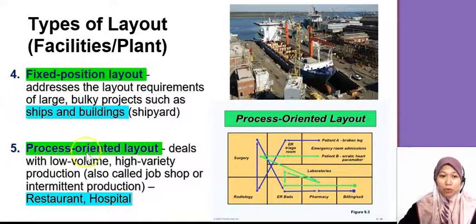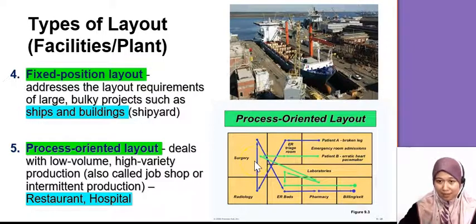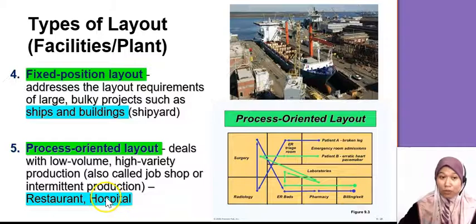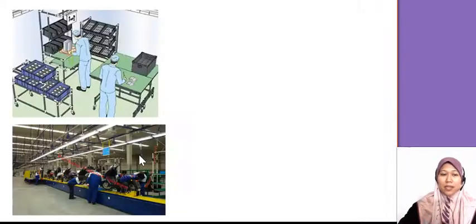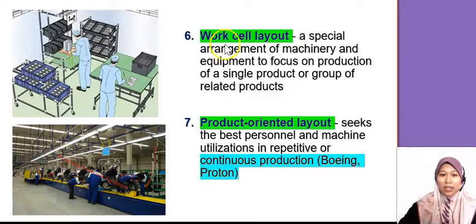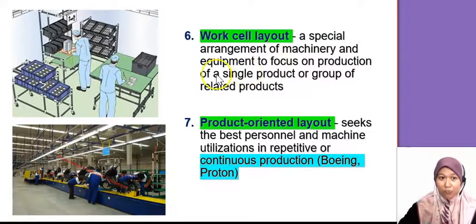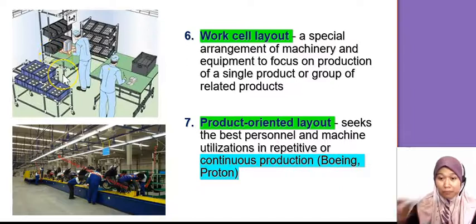And then we have process-oriented layout. Process-oriented layout is, for example, in the hospital — they go by process. And restaurant also by process. Next we will look at the work cell layout, and sometimes you find it in the factory. So it's a work cell, cell by cell, and each cell will produce some parts.